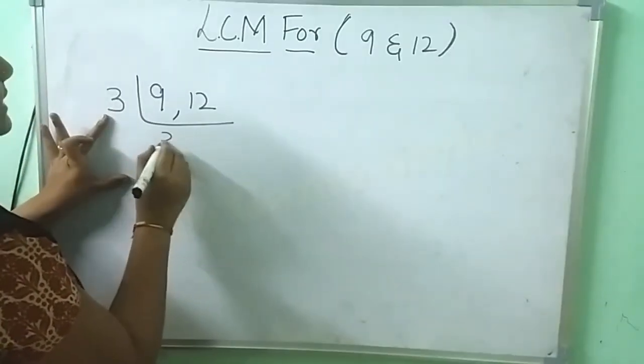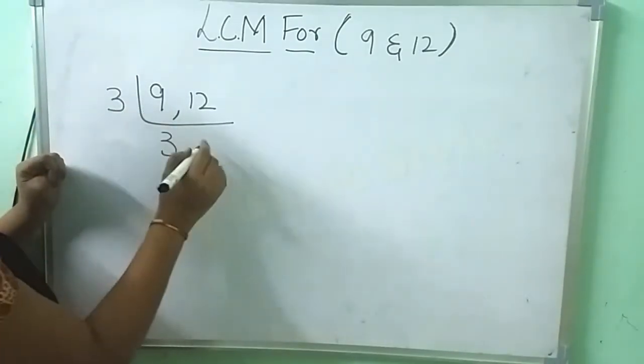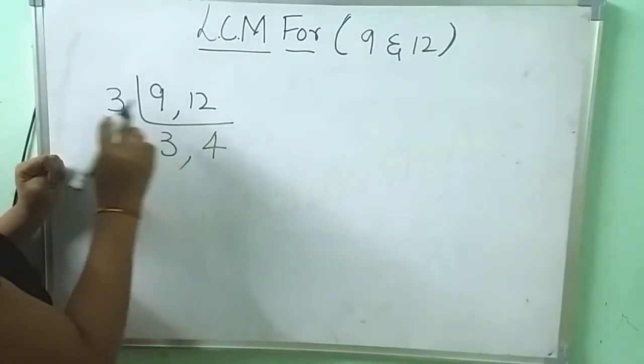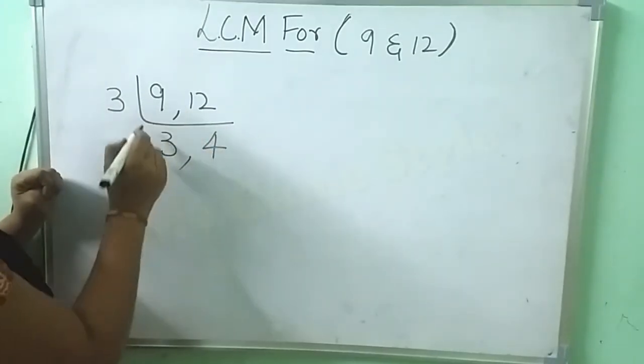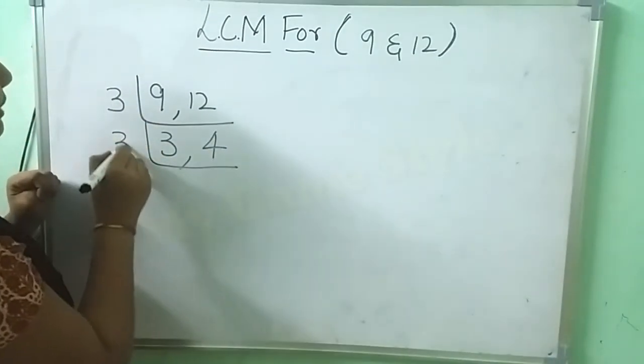3, 3's are 9. Then 3, 4's are 12. Again, I am taking 3 table here.